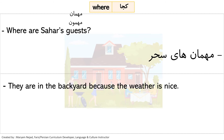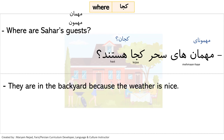'Mehmanha ye sahar koja hastand?' Informally, 'mehmanha' becomes 'mehmoona', and 'koja hastand' contracts to 'kojaan' — the conjugation changes to the letter 'n'. So the informal sentence is: 'mehmoona ye sahar kojaan?'